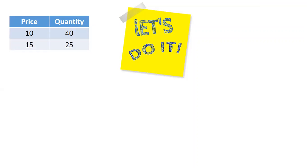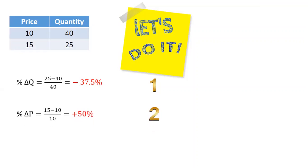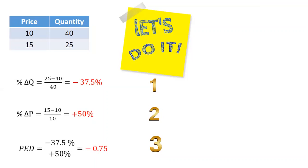Here we continue with the solution. Step one: percentage change in Q = (25 − 40) / 40 = −37.5%. Step two: percentage change in price = (15 − 10) / 10 = 50%. Step three: price elasticity of demand = −37.5% / 50% = −0.75. Since the absolute value is less than one, we can say this is inelastic demand.